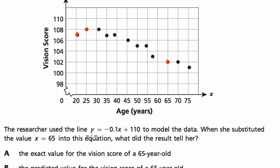The researcher used the line y equals negative 0.1x plus 110 to model the data. In other words, the researcher found a line of best fit, which we can estimate. It's starting at 110 with a slope of about negative one-tenth.